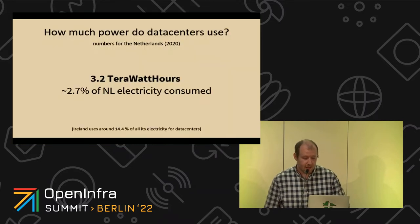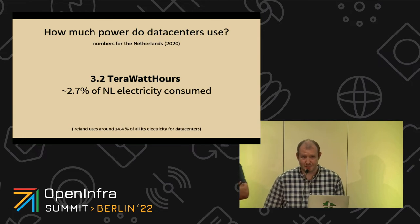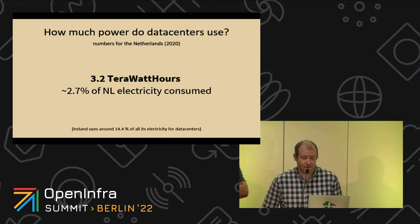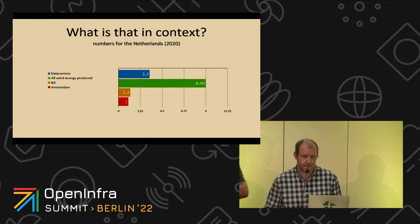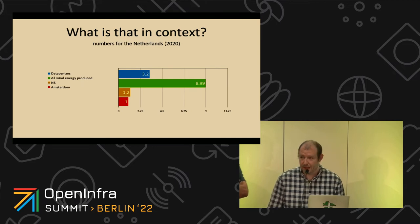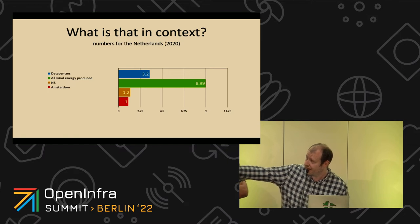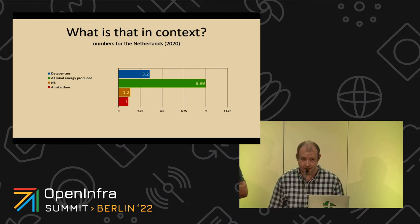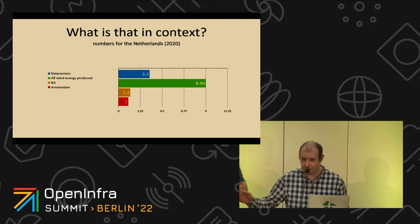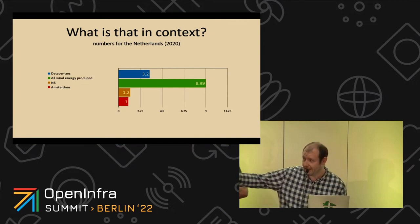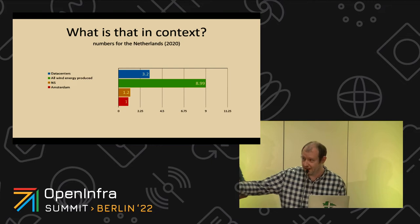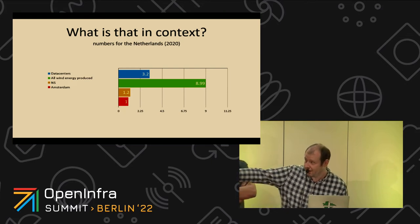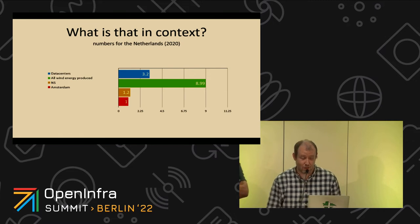So how much power do data centers use? That would be about 3% of all the electricity used in the Netherlands. Data centers actually use three times more energy than the NS, which is the Dutch railway, and more than the entire railway system and the city of Amsterdam combined. It's also a huge chunk of all the wind energy we produce, and we have a lot of wind in the Netherlands.